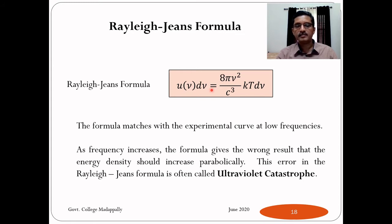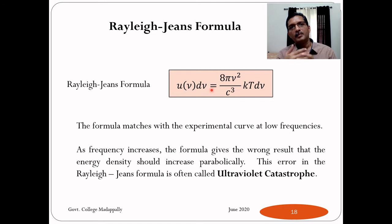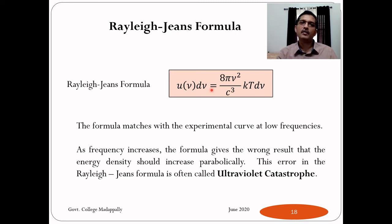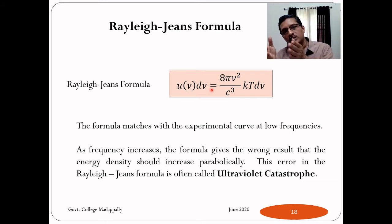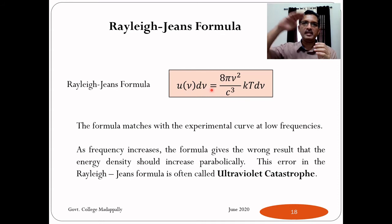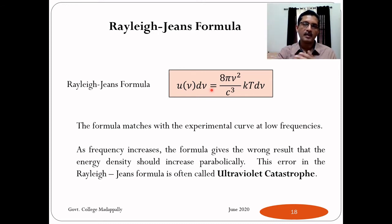This error in the Rayleigh-Jeans formula is called the ultraviolet catastrophe. The name comes from the fact that the mismatch occurs at the high frequency side — for most black bodies, the peak is in the visible or ultraviolet region. The experimental curve peaks and then decreases, but Rayleigh-Jeans formula predicts a parabolically increasing curve — hence the term ultraviolet catastrophe.